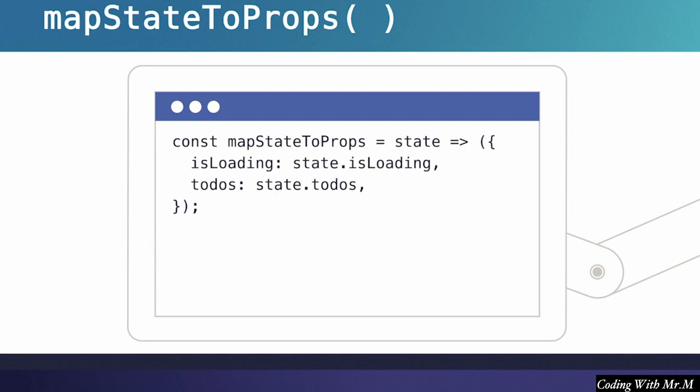Let's take a look at the MapStateToProps function for our components, and specifically how it's getting the data from the state by referring exactly to how certain data is stored in the state. At first glance, this might seem pretty harmless, and most of the time it is, but here's the problem. Getting the data we need from the state in this way requires our components, and more specifically our MapStateToProps function, to have an intimate knowledge of how our data is stored in the state.